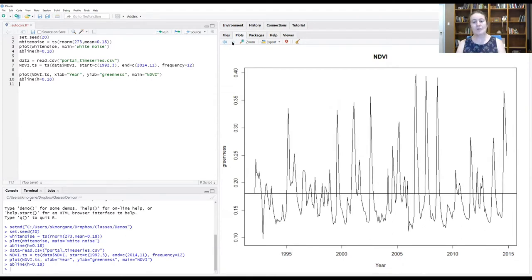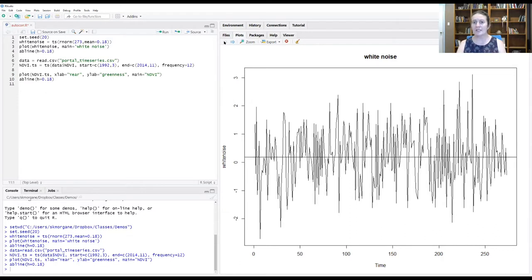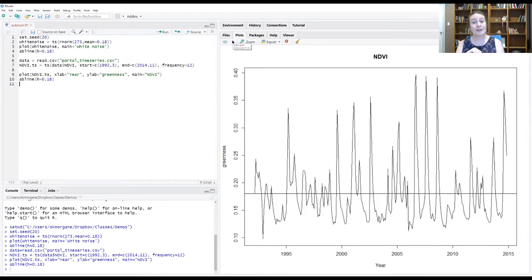And so let's think for a moment about what are some of the things that make a biological data set really different from how a randomly generated time-series like white noise is generated. A good starting point is to think about what we learned about NDVI from last week. So one of the big things we learned about NDVI is that there's this really strong seasonal signal in our data.